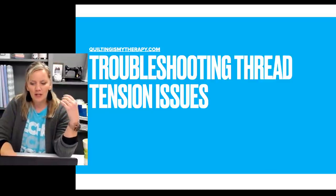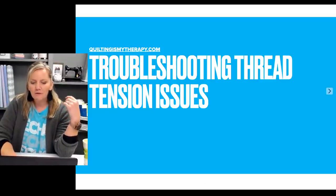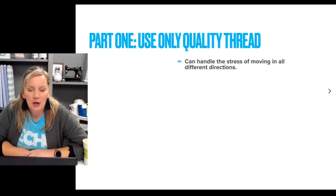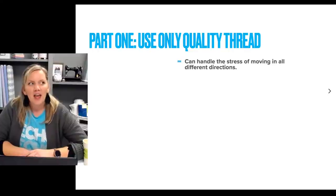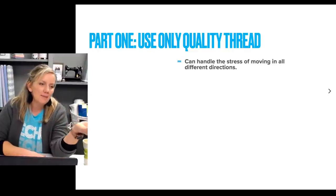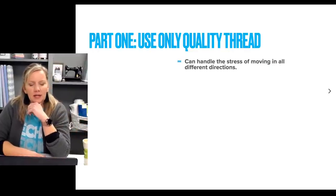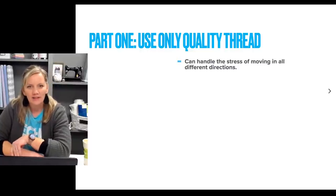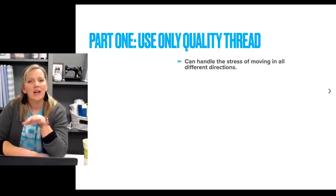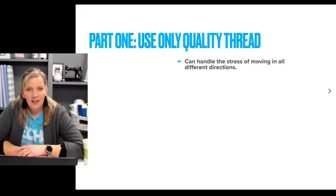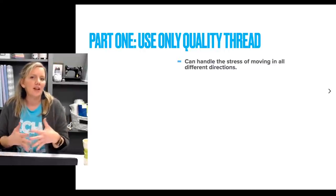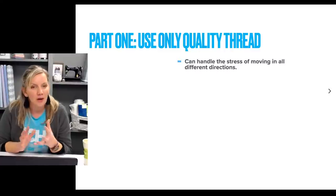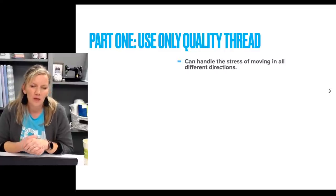The first thing is thread. I did a whole live chat about thread a couple of weeks ago — you can find that on my YouTube channel — where I talk about the different types and styles. The most important thing I stressed in that chat was that you have to use quality thread. If you skimp on anything else, just don't do it on thread. Machine quilting is putting stress on that thread in so many different directions.